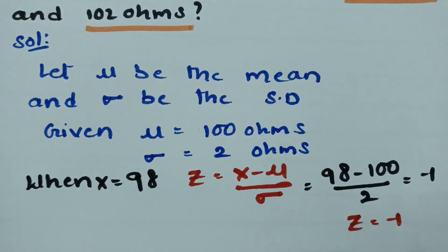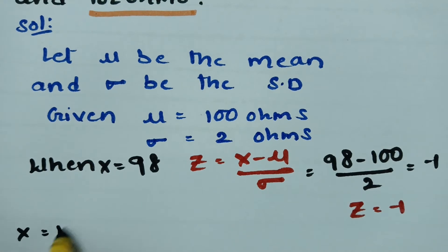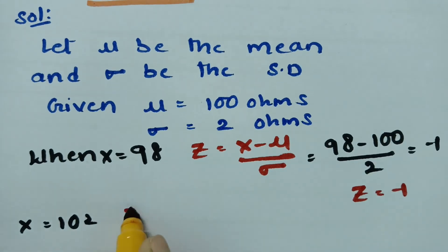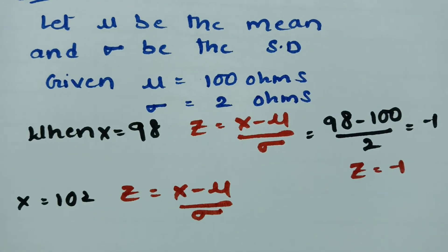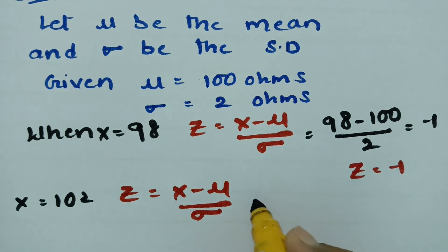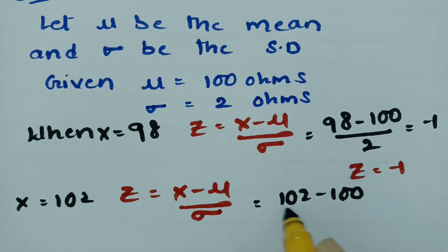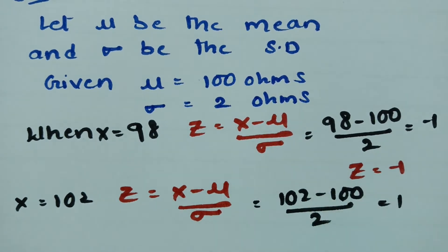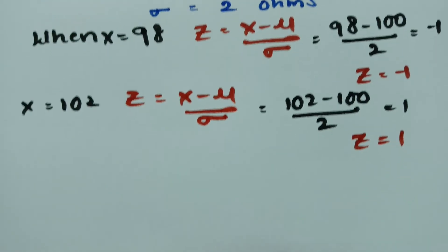When x is equal to 102 ohms, we apply the same formula: z = (x − μ) / σ = (102 − 100) / 2 = 2 / 2 = 1. So when x = 102, we get z = +1. Now we draw the normal curve.